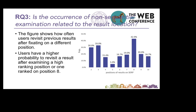For research question 3, is the frequency of non-sequential examination related to result location? This question tries to understand whether users have the same revisit probability when browsing the entry page. We computed statistics on the probability of users' revisits after examining results in different positions. The result shows that users have a higher probability to revisit a result after examining a high-ranking position or position 8. Therefore, the frequency of non-sequential examination is related to result location.